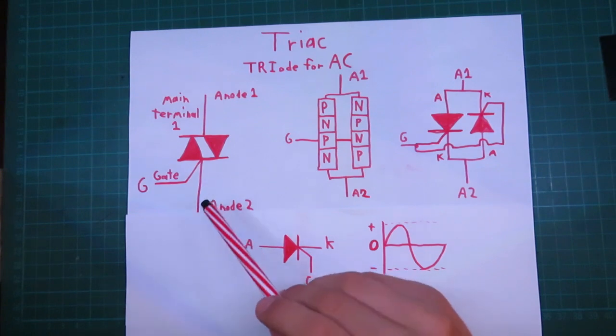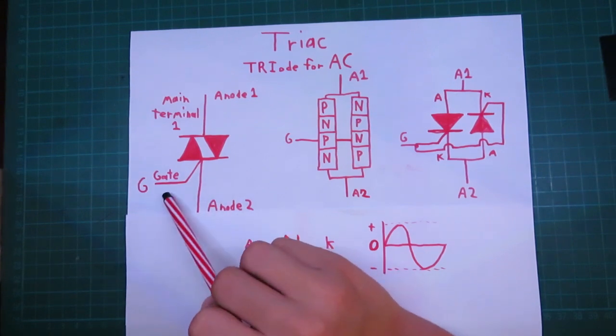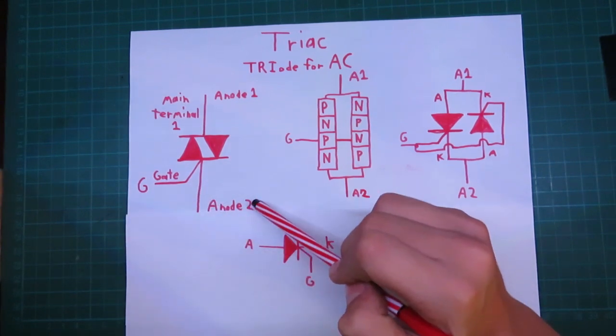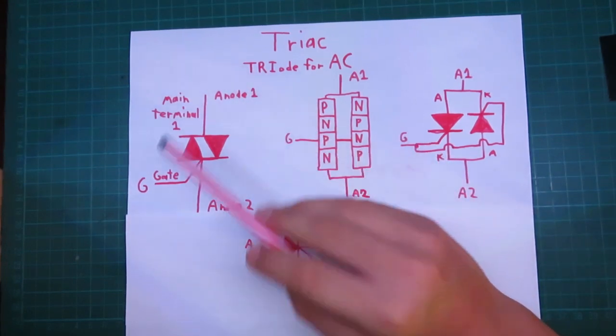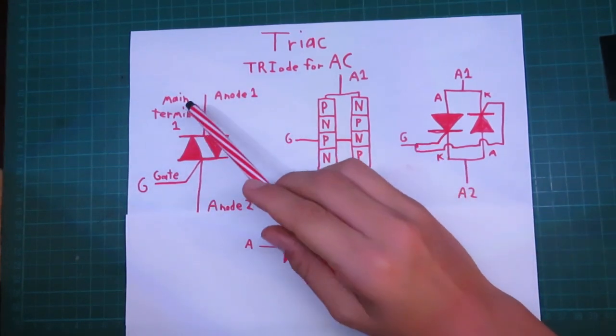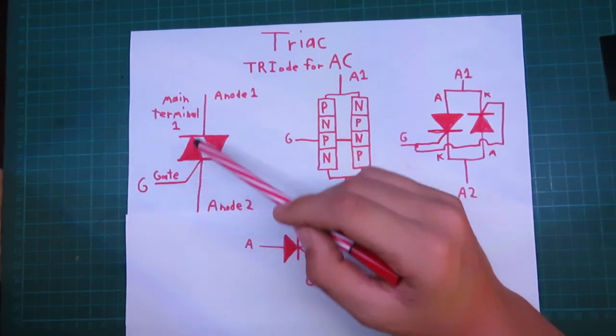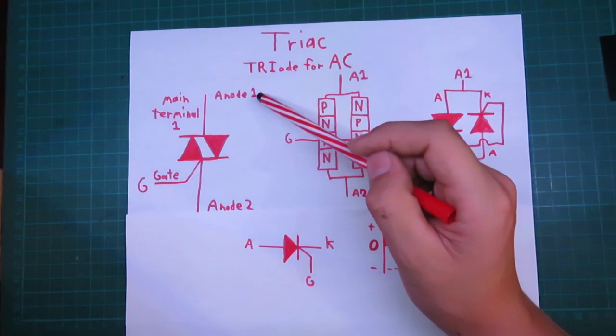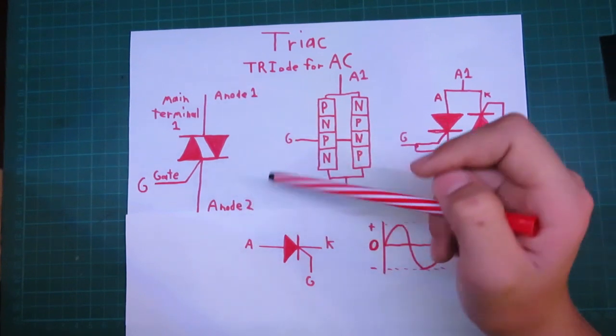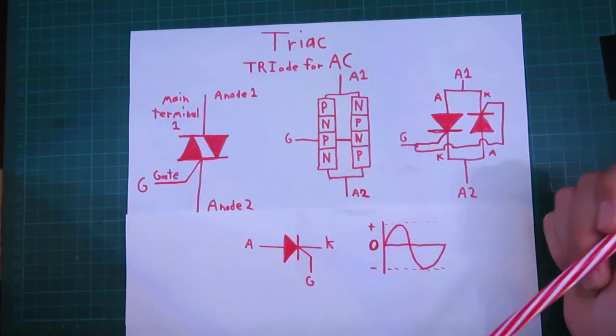So, your triac, when you apply a signal to the gate, what can happen is, current can flow from the anode 1 to anode 2, or anode 2 to anode 1. These are also called main terminal 1 and 2, or terminal 1 and 2 on a triac, but I'll call it anode 1 and anode 2 in this video. So, let's test these triacs out.